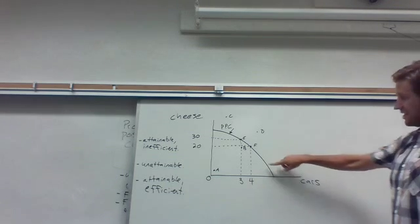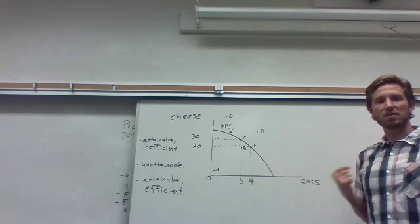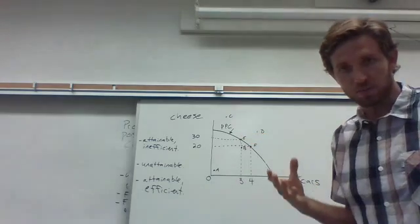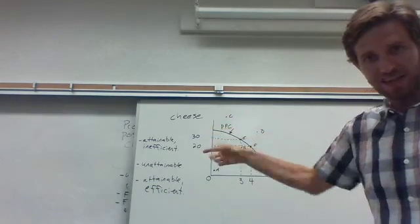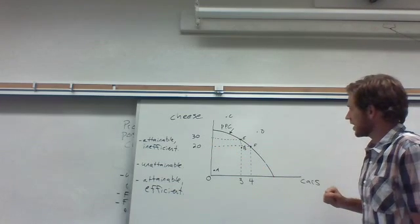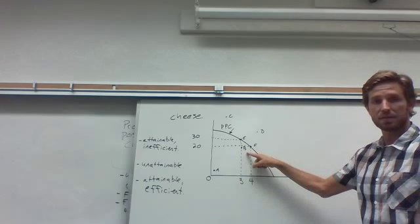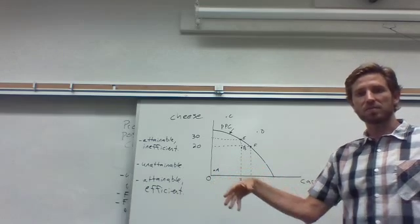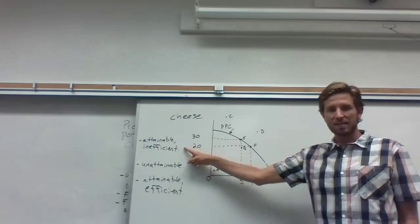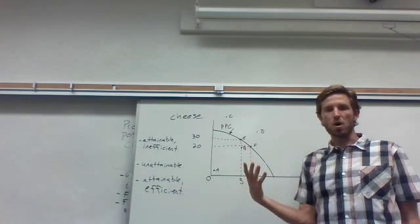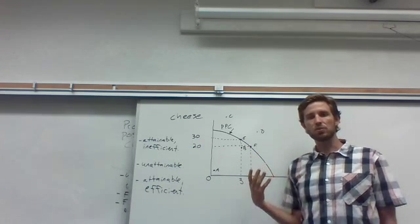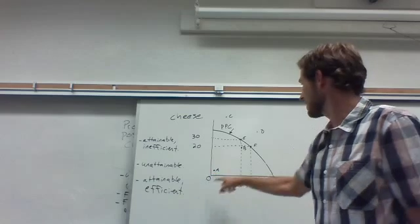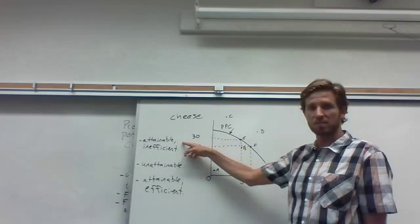So as I said, the line here is showing us the limit on what's possible to produce. And so I drew some points here in this graphical space so we can get some quick practice interpreting those various points. That's a common exam question that you might encounter. So first up, take note of point A and B. The thing to note about these is that they are inside the line within our production possibilities. And the way to interpret that is that this is possible to produce currently. So given what we know about this country's ability to produce, they could make that much cheese and that many cars simultaneously. Same thing for point B. It's attainable and possible to produce.